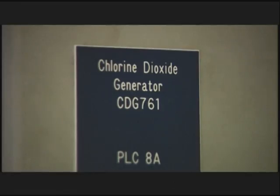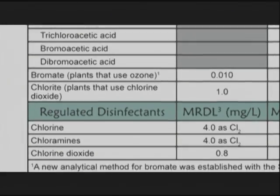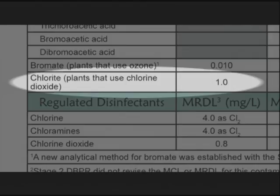Chlorite is a byproduct of chlorine dioxide and occurs when the disinfectant breaks down. The MCL for chlorite is one milligram per liter, or one part per million.